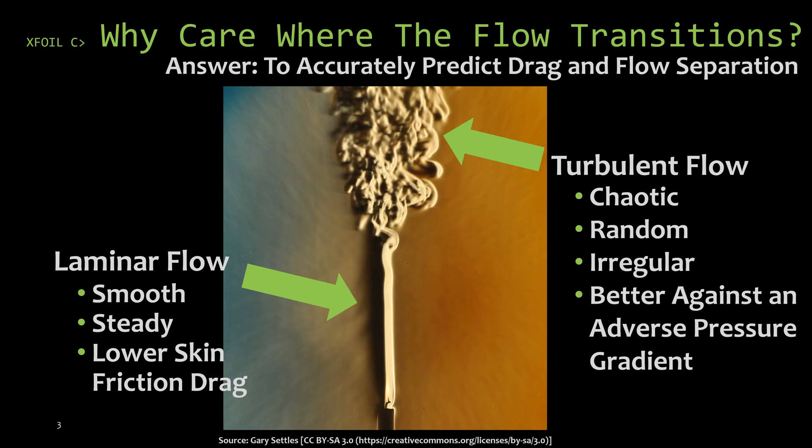Why do we care whether the flow is laminar? Why do we care whether it's turbulent? And why do we care where it transitions?